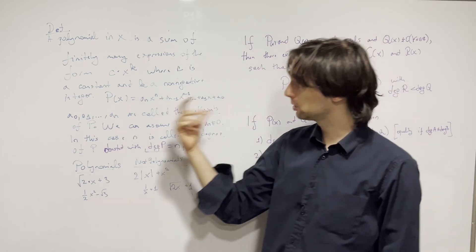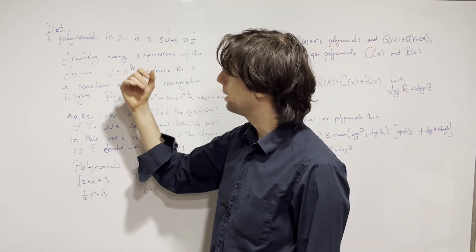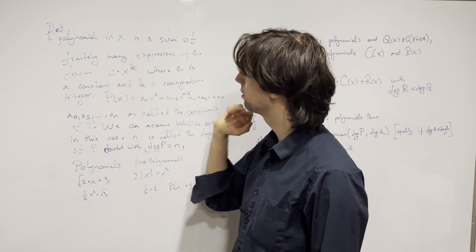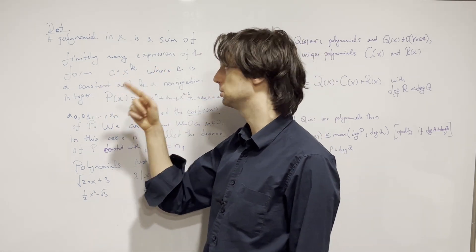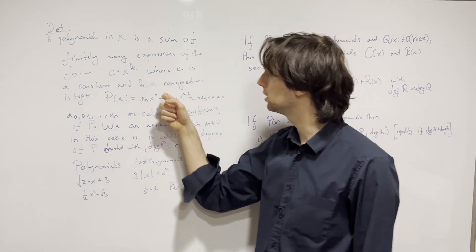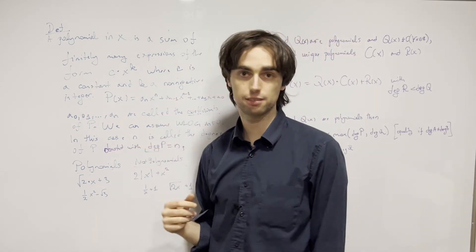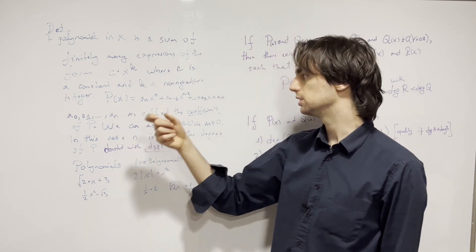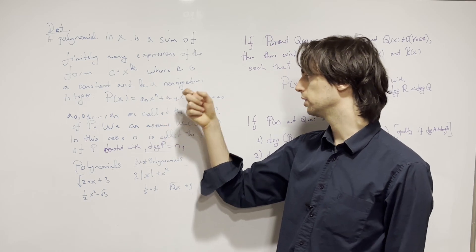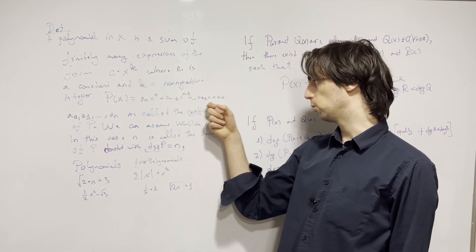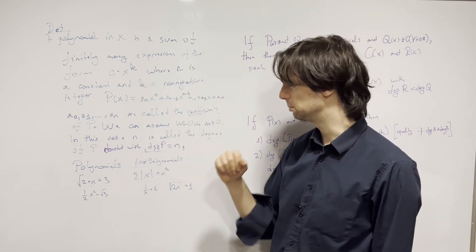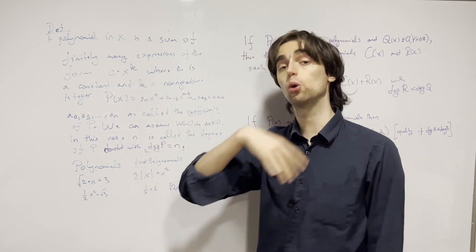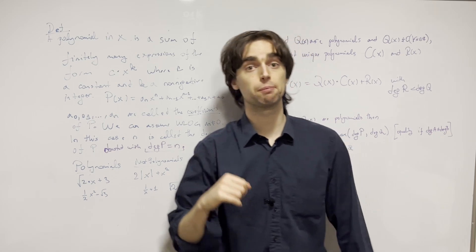So first is the definition: what is a polynomial? A polynomial p of x is a sum of finitely many expressions of the form c times x to the power of k, where c is a constant and k is a non-negative integer. We can write this as p of x equals a_n times x^n plus a_{n-1} times x^{n-1}, all the way down to a_1 times x plus a_0, with pluses in between.